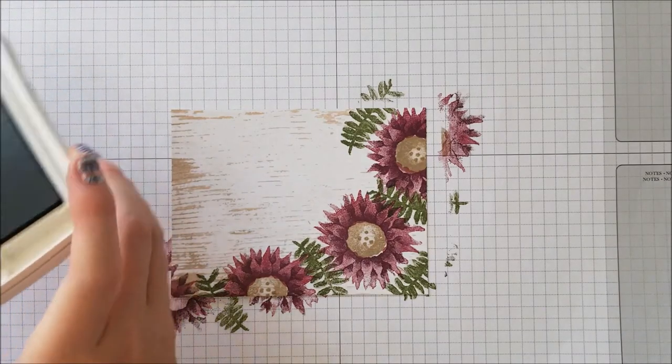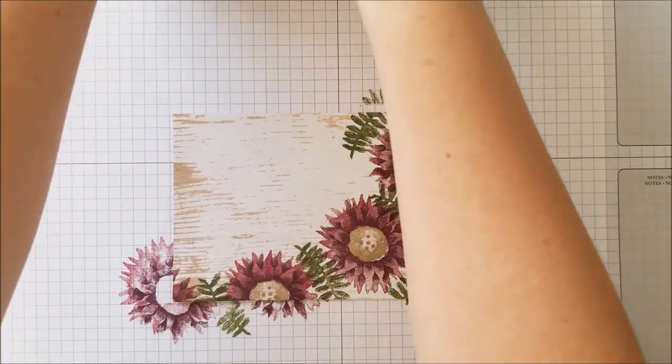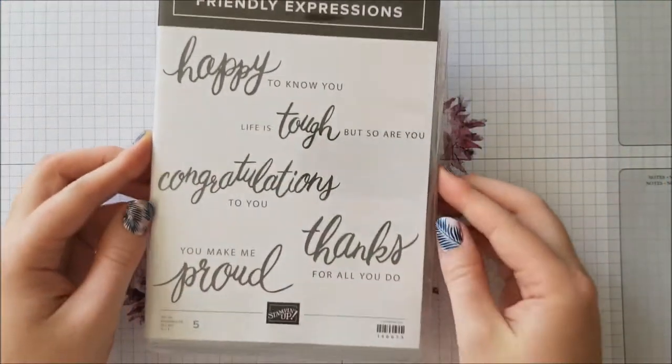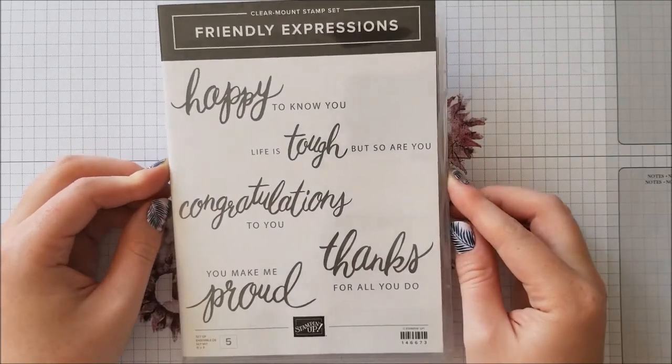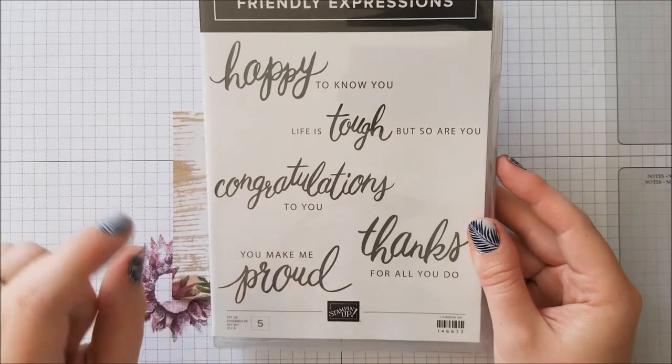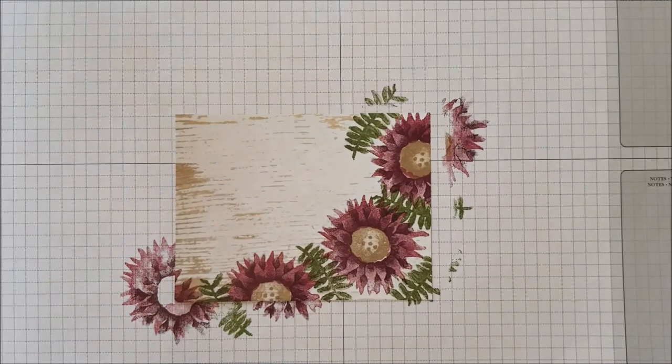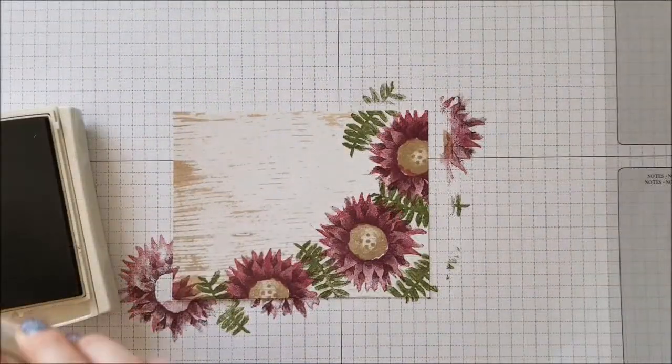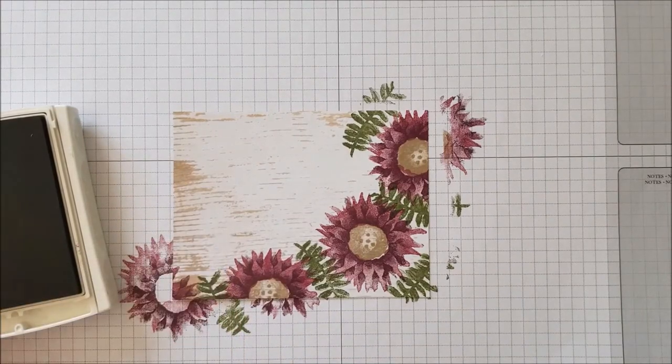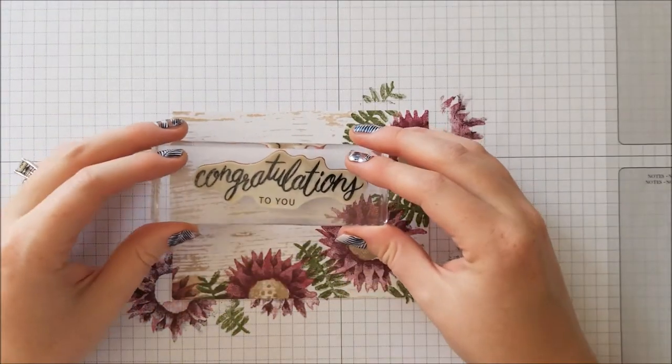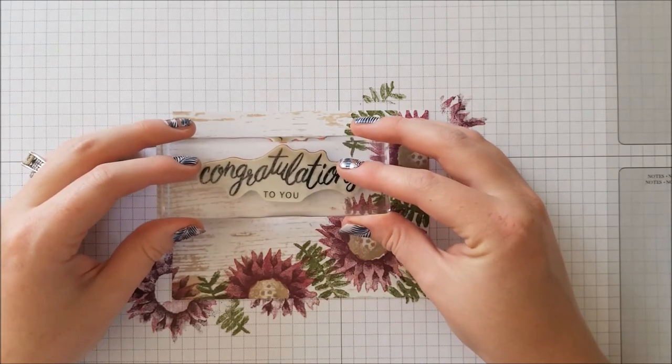So now that we're done inking that up, we're going to go ahead and stamp our little saying on there. So I'm going to be using my favorite set, which is Friendly Expressions. As you can see, it comes with a lot of really beautiful expressions that you can put on your card. So I'm going to do the same that I already showed you, which is the congratulations to you. And we're also going to be using Rich Razzleberry. For placement, we're just going to set it kind of over a bit because we're still going to tie a piece of thread. So we're going to place this right about here.